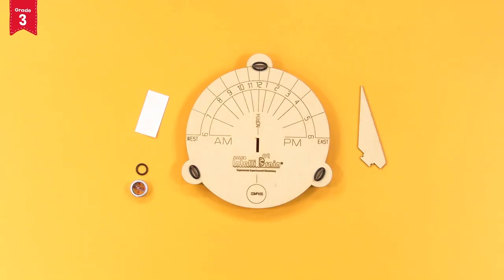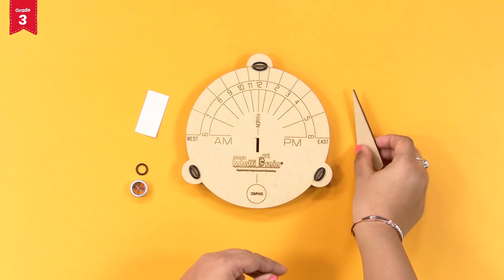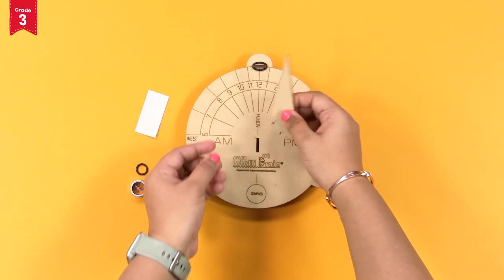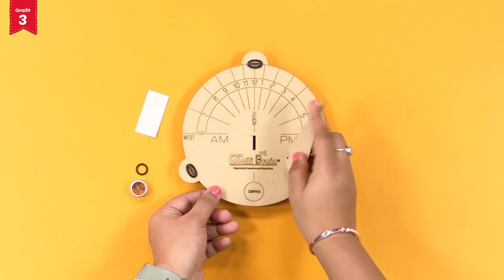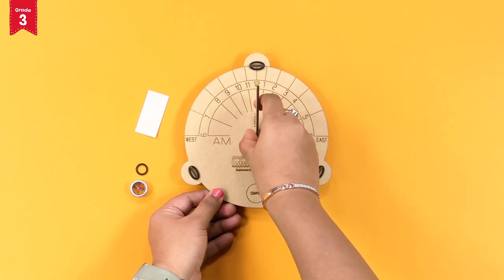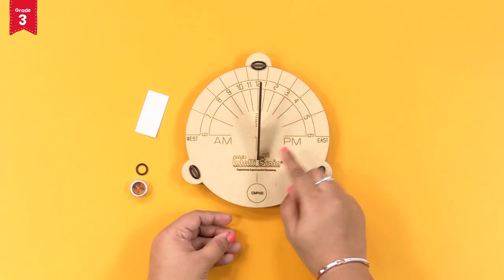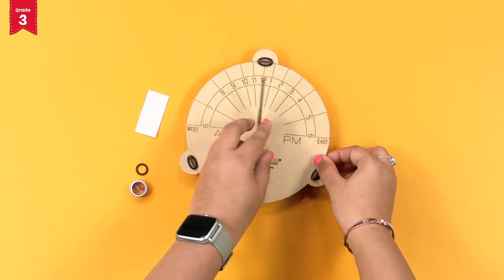Now, insert the extended bit of the shadow maker into the central slit on the sundial base like this. Fix this with an o-ring on the other side.